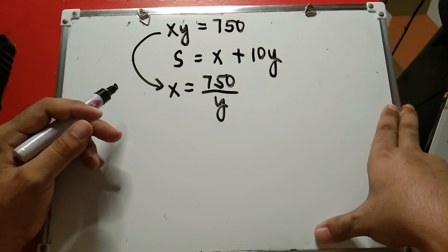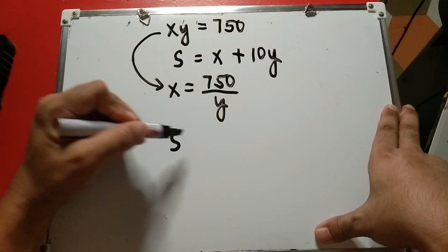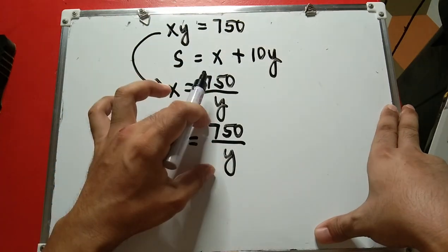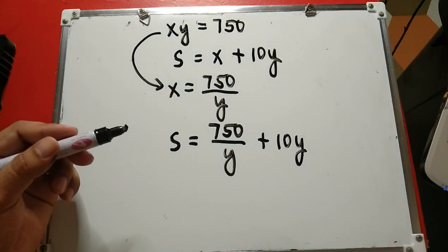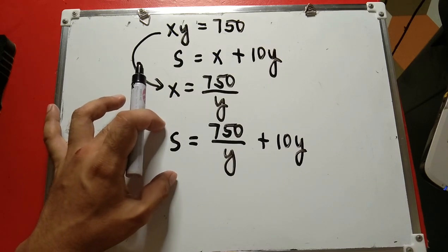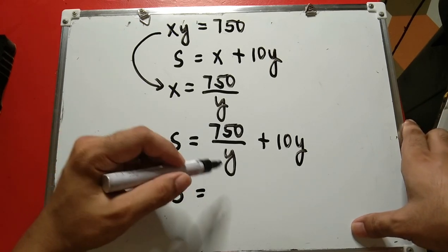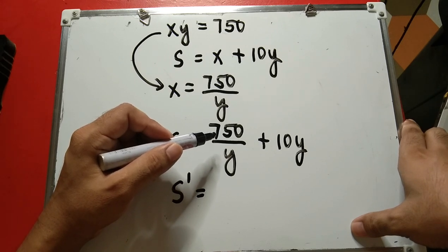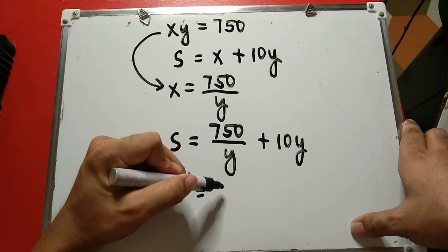We plug x equals 750 over y into the sum equation, giving S equals 750 over y plus 10y. The next step is to find the critical points, so we take the derivative of S with respect to y. The derivative of 750 over y is negative 750 over y squared, so S prime equals negative 750 over y squared plus 10.